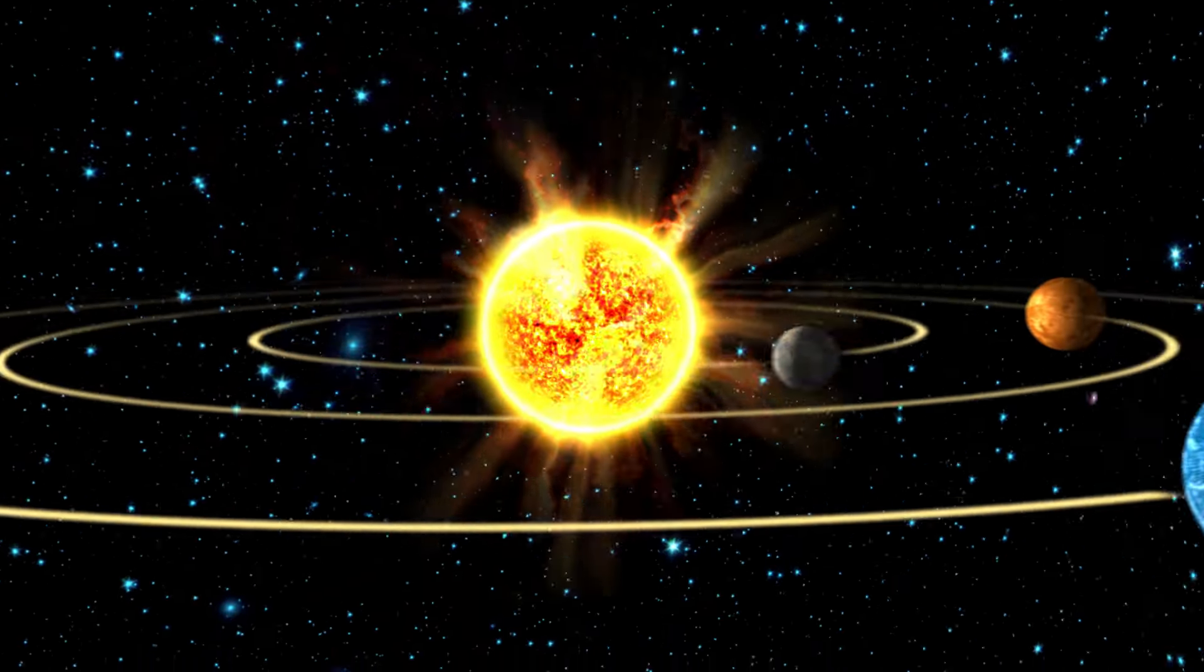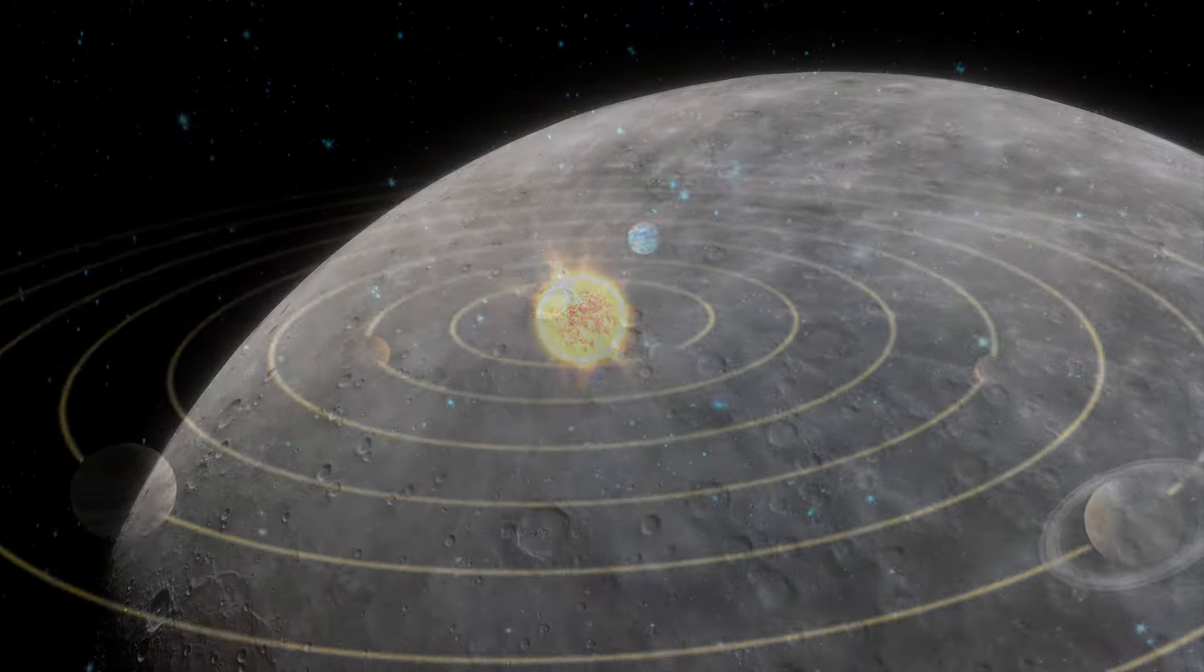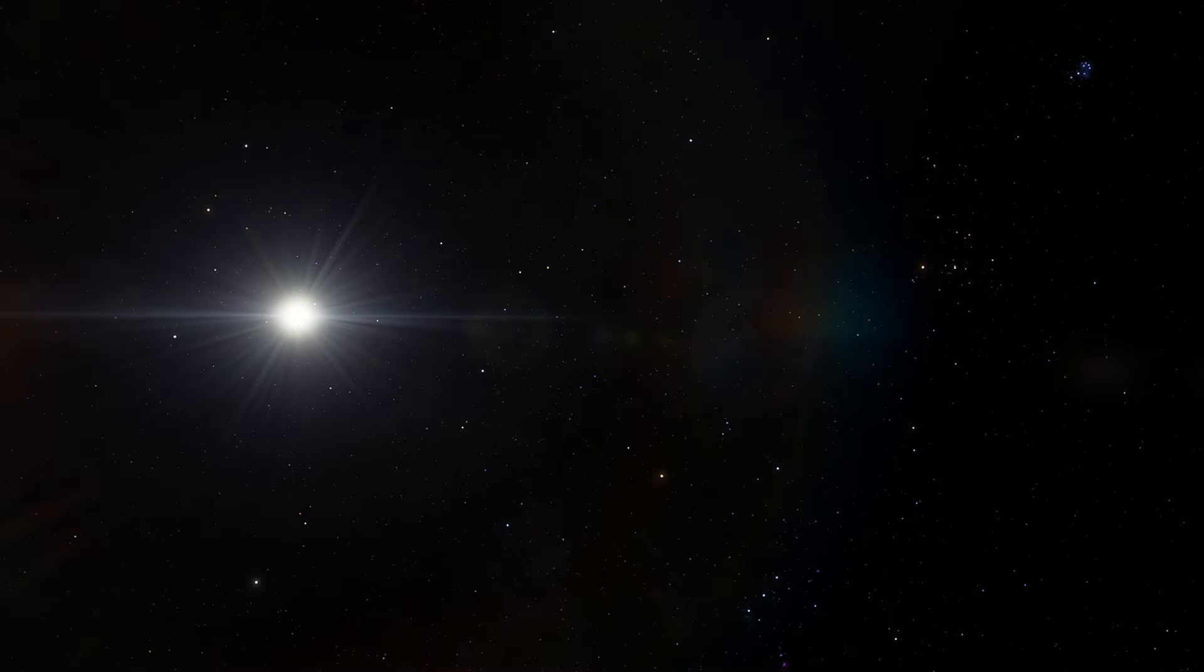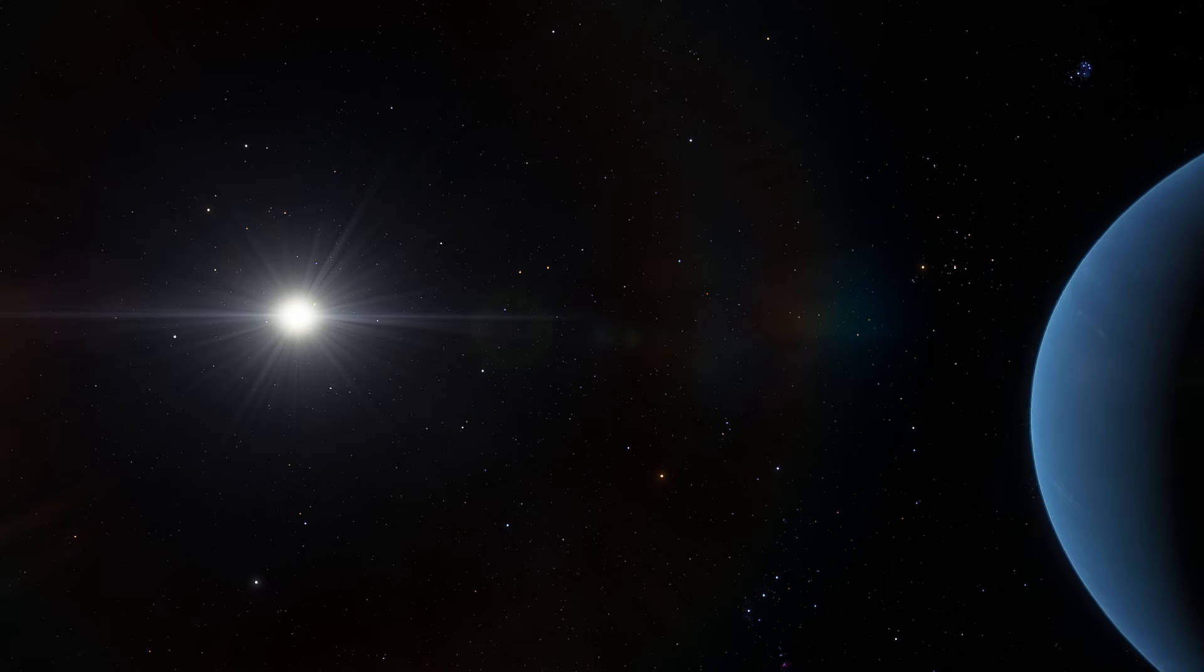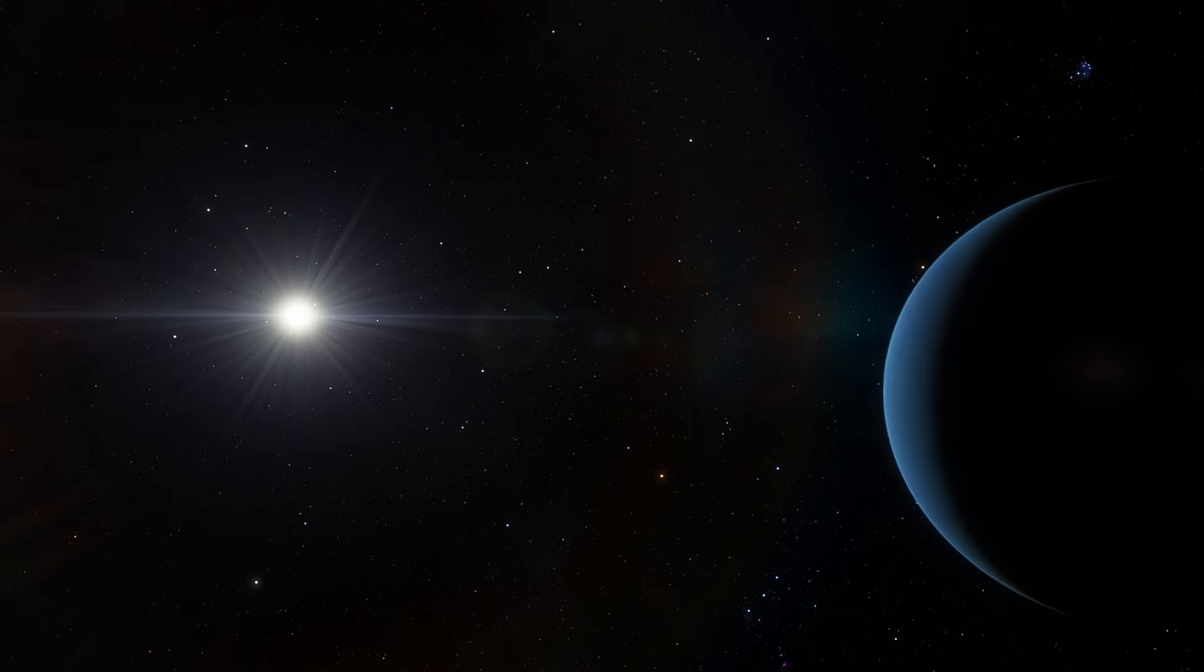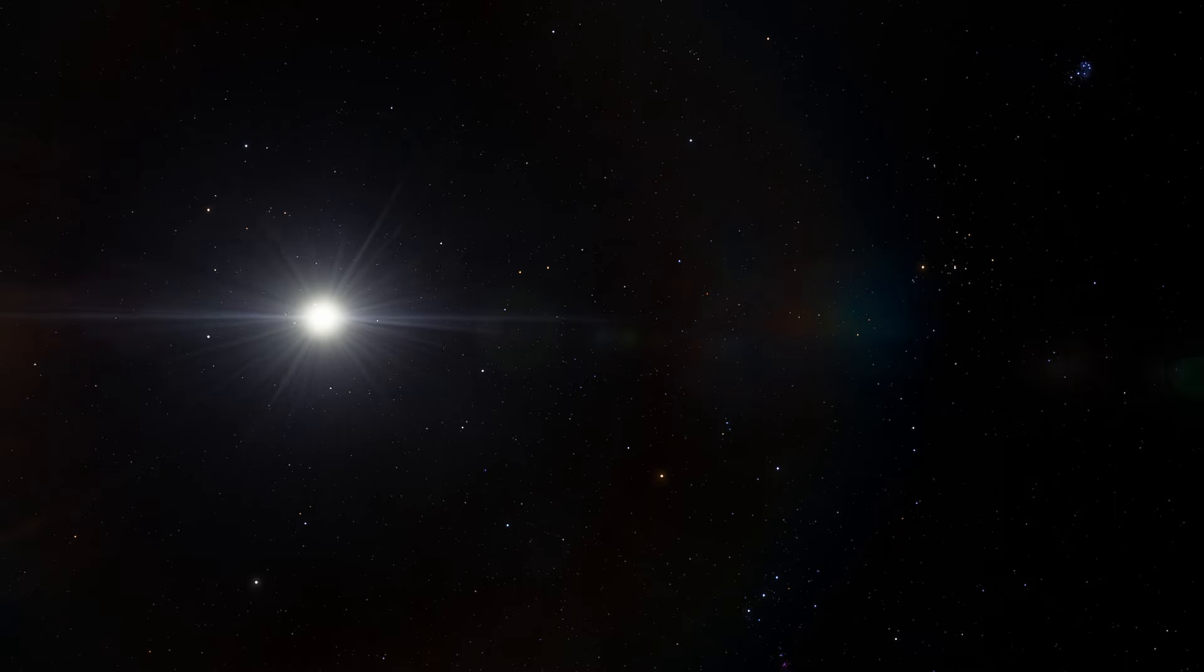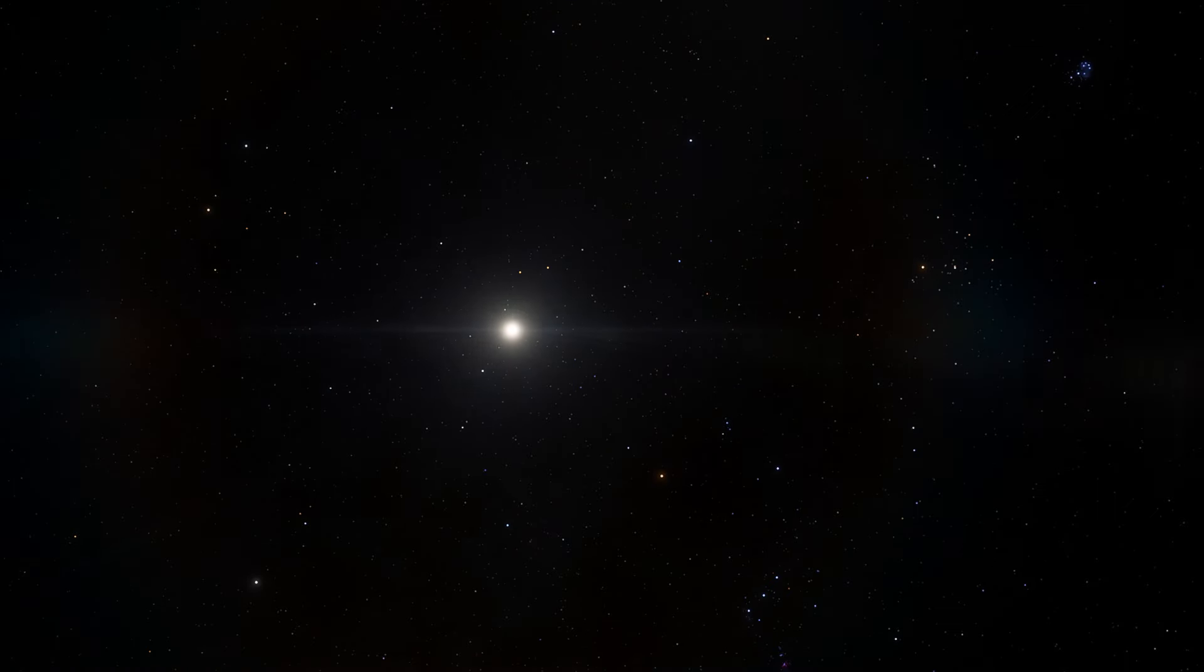Our voyage through the solar system has taken us from the searing surface of Mercury to the icy reaches of Neptune. Each planet, many with their own moons and rings, tells a unique story of the cosmos. As we gaze back at the sun, a mere point of light from the edge of our solar system, we are reminded of the vastness of space and the endless possibilities that await us.